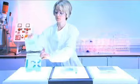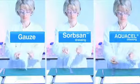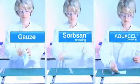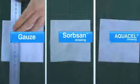First, the products to be compared are unpacked under laboratory conditions. On the left is Alliance Santé Gauze. In the middle, Sorbzan, an alginate dressing, and on the right, Aquacel dressing, incorporating hydrofibre technology.